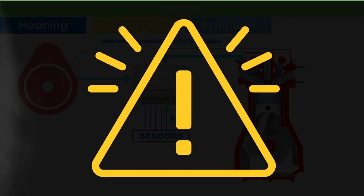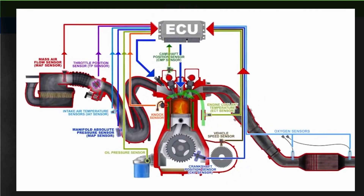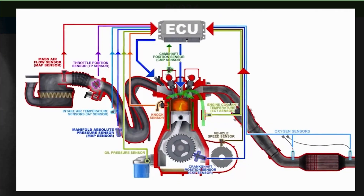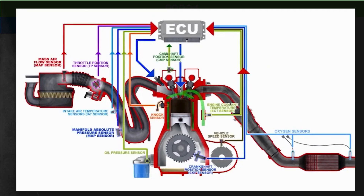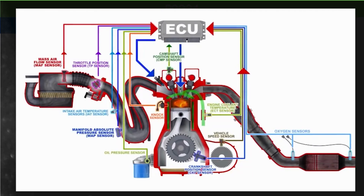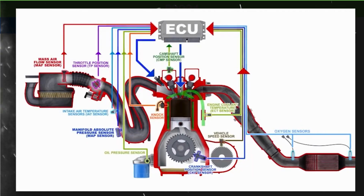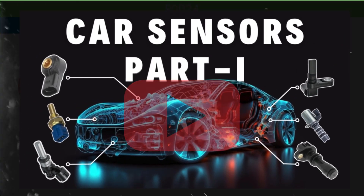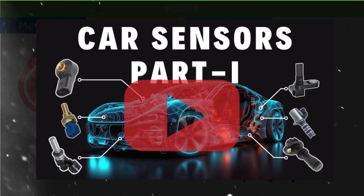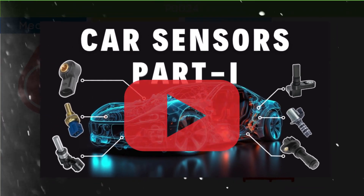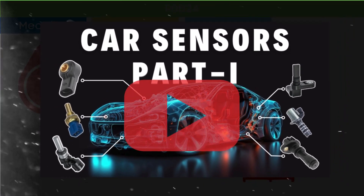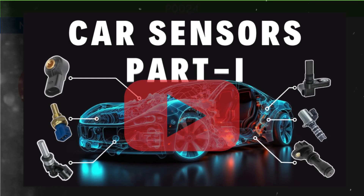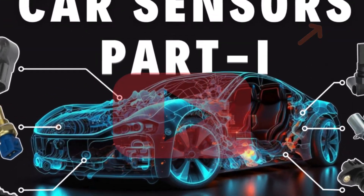Cam angle is only one of several engine management parameters used by the ECU. The ECU also relies on other EMS sensor inputs. To learn more about sensors of the engine management system, you can check our detailed video on car EMS sensors — check the link in the corner.